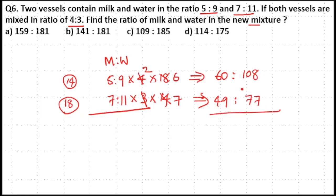Now the parts are equal, you can directly add these ratios together. 60 plus 49 is 109, 108 plus 77 is 185. So 109:185, option C is your answer.